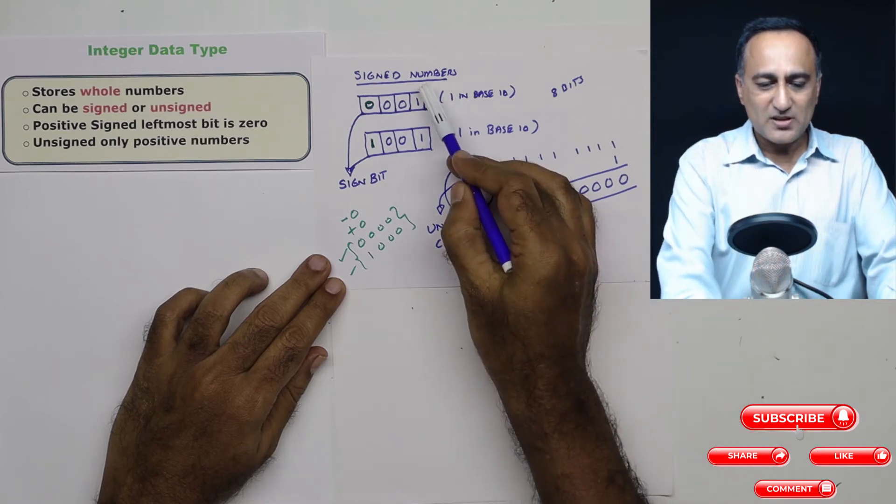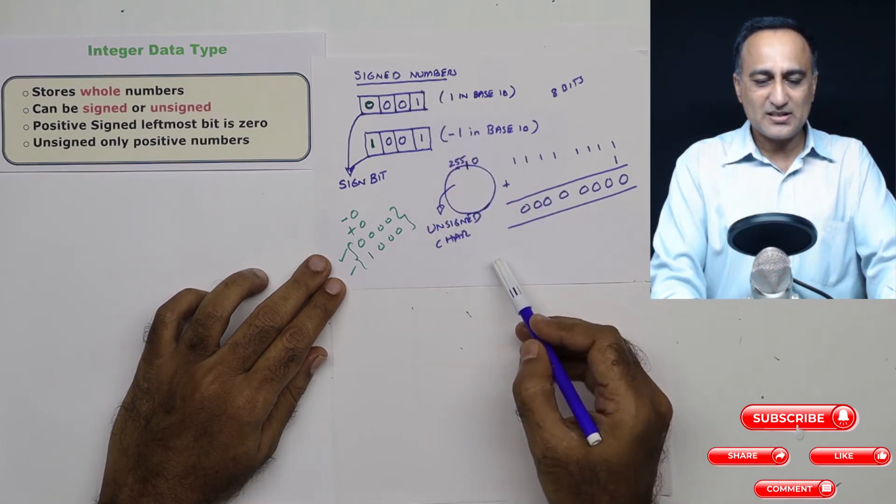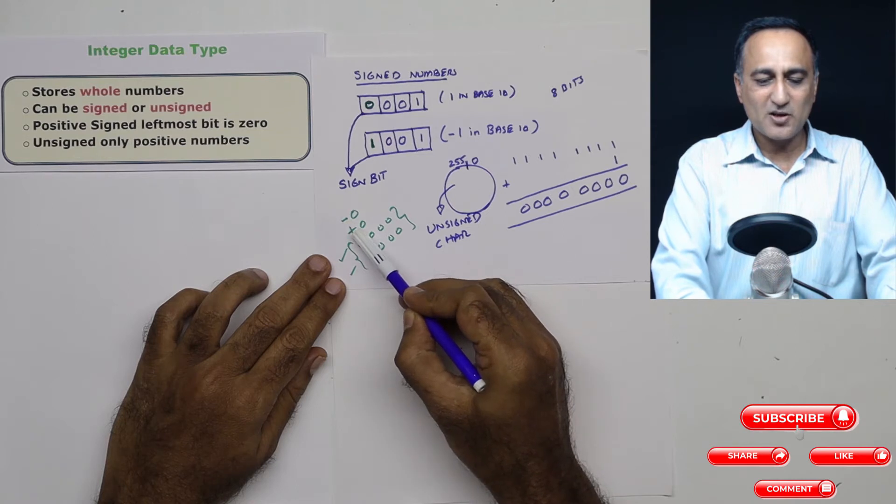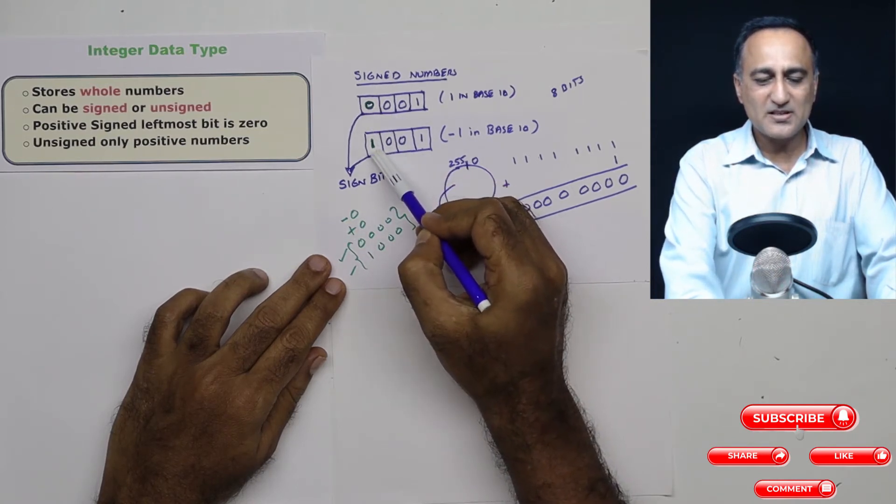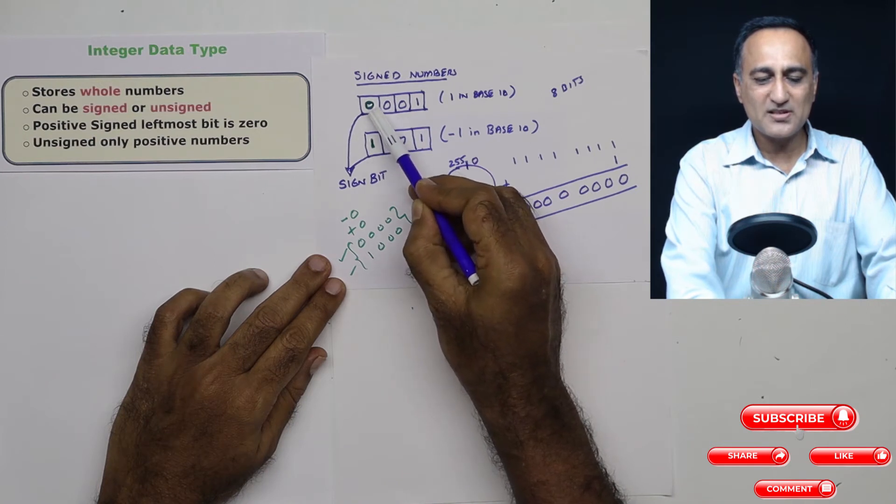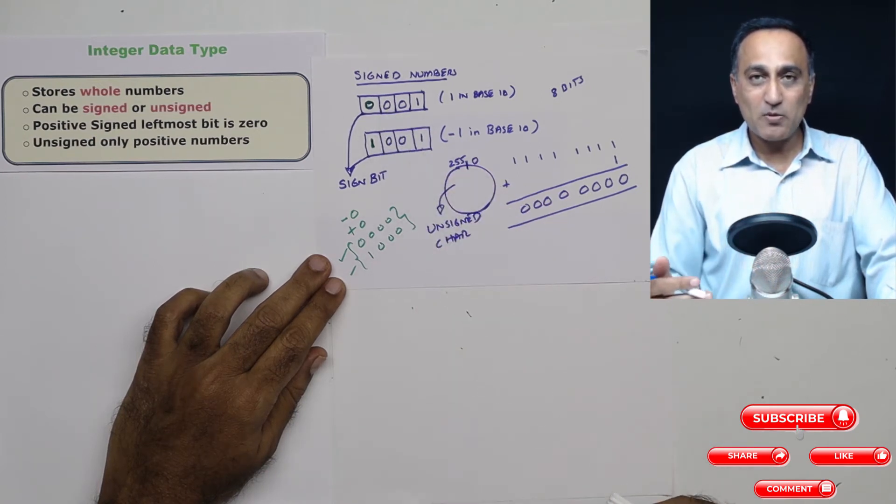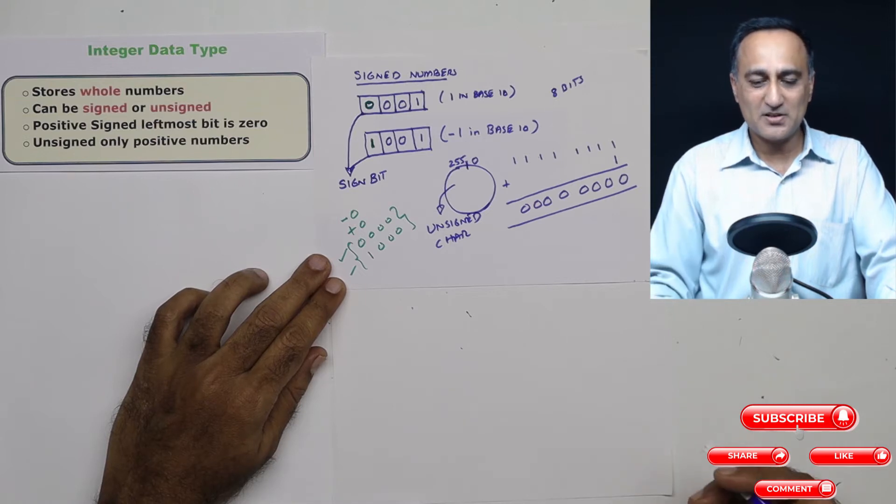Now the problem with this signed number representation is if I have to represent minus zero and plus zero, which is actually meaningless, for minus zero it will represent this as one, for plus zero it will represent this as zero. So now you have a problem: zero has two different representations.